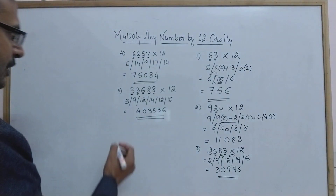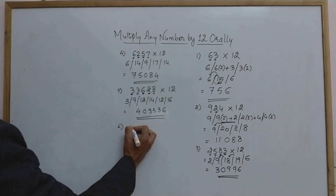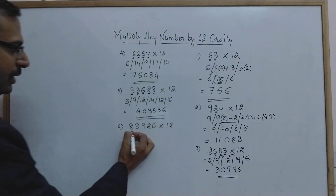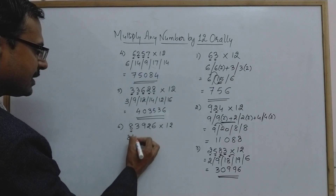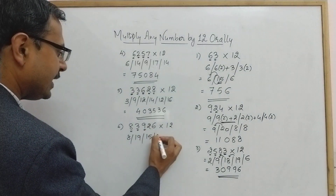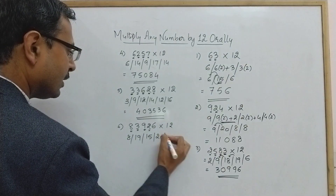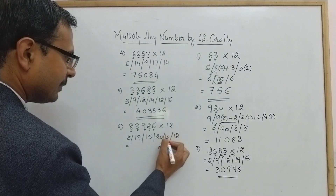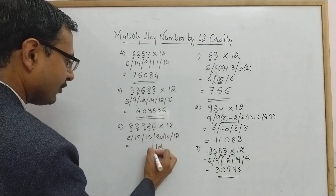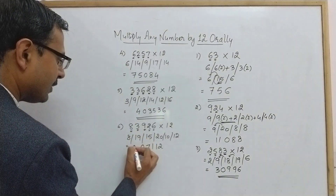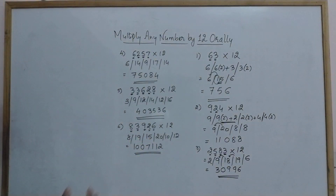Sixth example: 83926 × 12. Starting with 8: double of 8 plus 3 = 19; double of 3 plus 9 = 15; double of 9 plus 2 = 20; double of 2 plus 6 = 10; double of 6 = 12. Writing the answer: 2, then 11 with carry gives 1; 21 with carry gives 1; 17 gives 7; 20 gives 0 with 2 carried; 8 + 2 = 10. So the answer is 1007112.